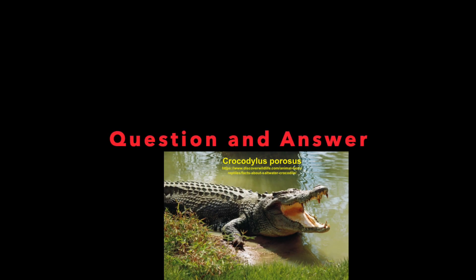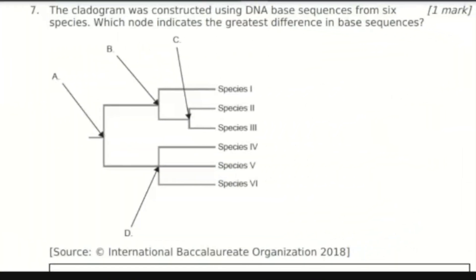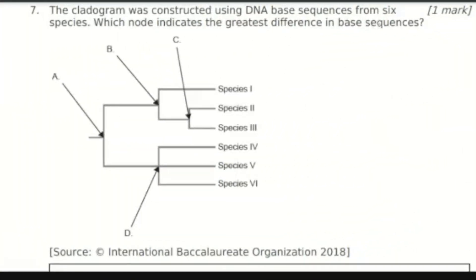Here are the answers to the questions from the last lesson. The cladogram was constructed using DNA base sequences from six species. The question asks which node indicates the greatest difference in base sequences.